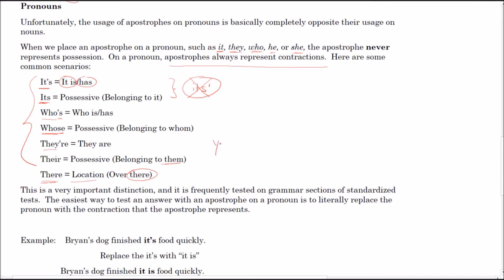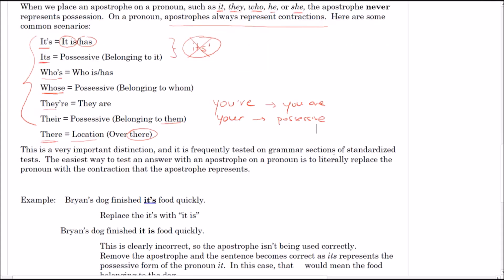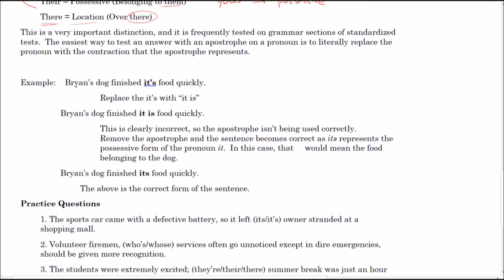This is a really common mistake, partly due to autocorrect and spell check. 'They're,' 'their,' and 'there' all sound the same but mean three different things: 'they're' is the contraction for 'they are'; 'their' is the possessive form meaning belonging to them; and 'there' is a location. Similarly, 'you're' is 'you are' and 'your' is the possessive. For example: 'Brian's dog finished its food quickly' — replacing 'it's' with 'it is' gives nonsense, so the correct form is 'its,' the possessive.